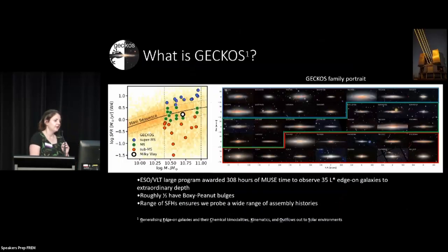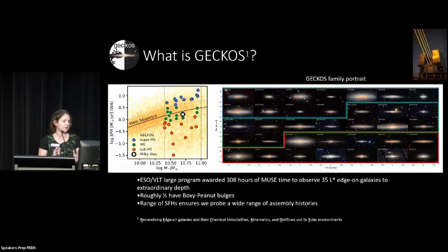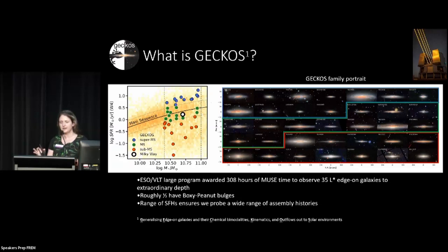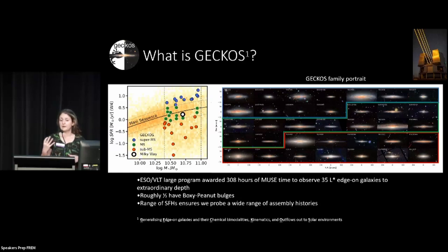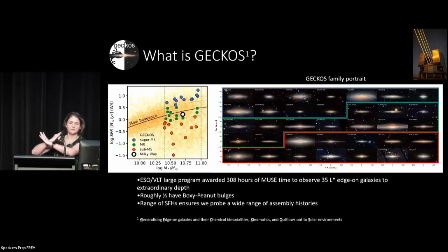So what is GECKOS? We are an ESO VLT large program. We were awarded 308 hours of new-moon time to observe 35 Milky Way massed edge-on galaxies, and we're going super duper deep. We have a range of morphologies — some have bulges, some don't. About half of them have these boxy peanut bulges, these X-shaped things which are the edge-on projection of a buckled bar.